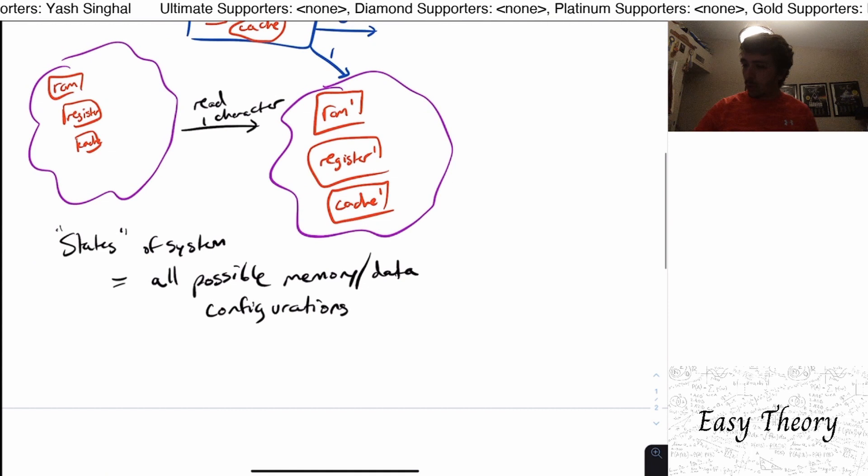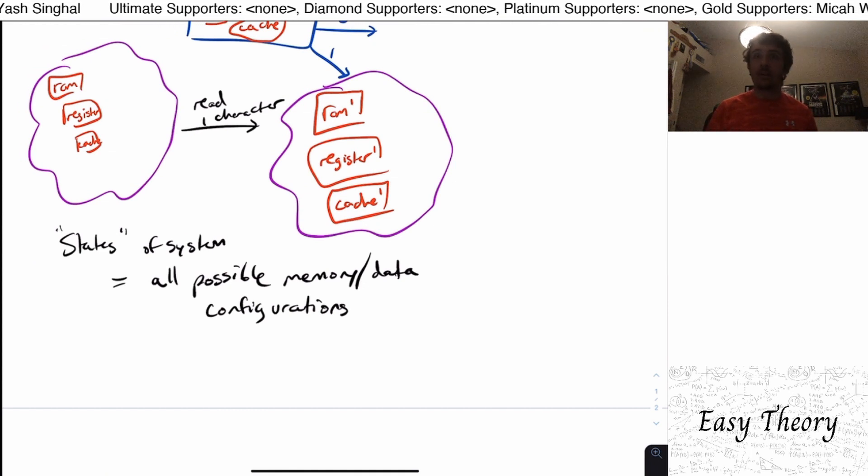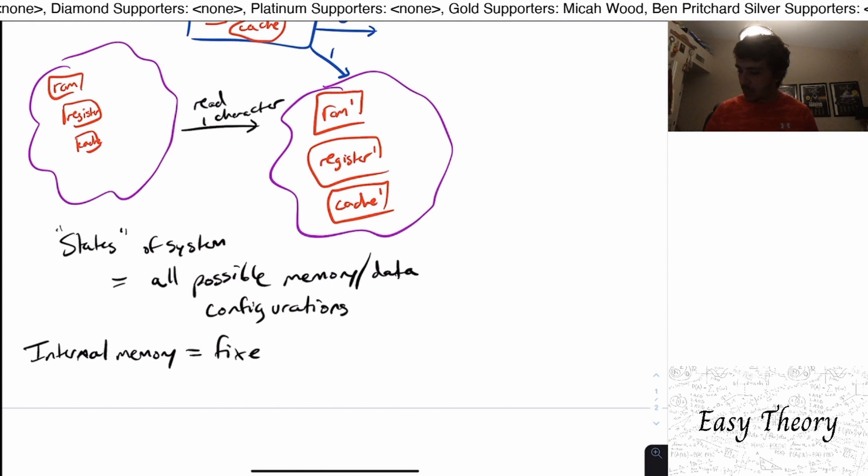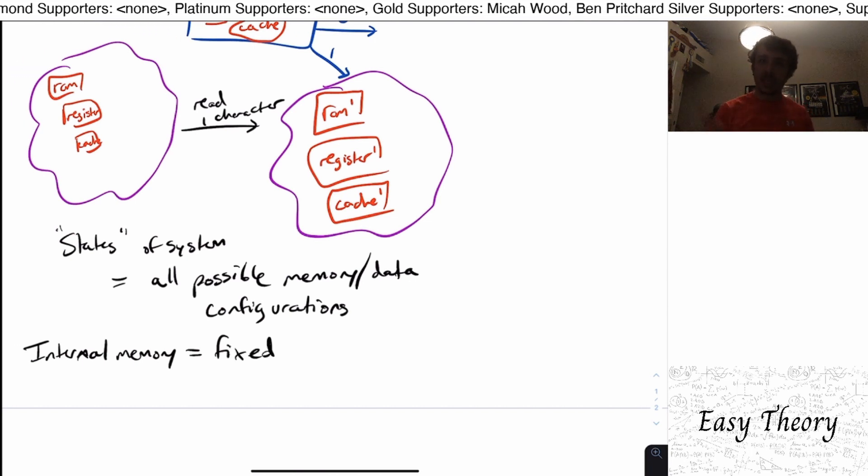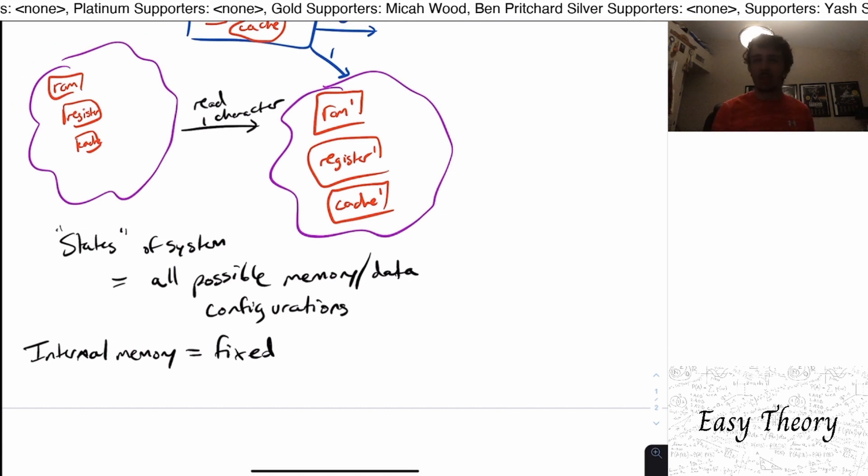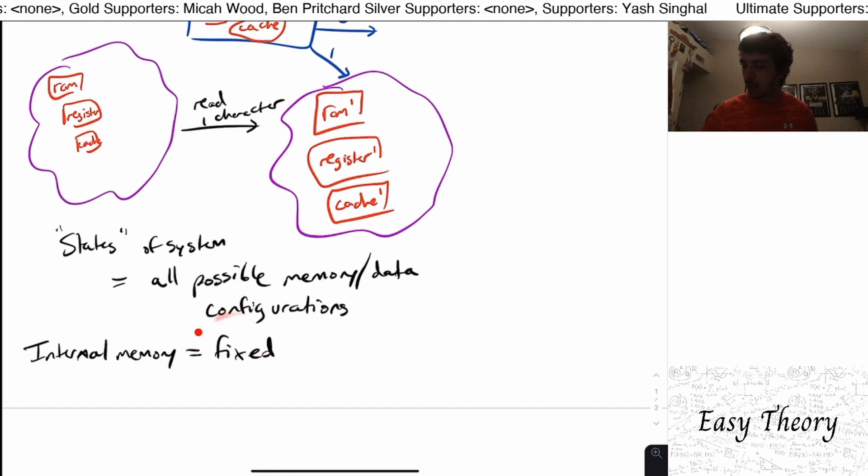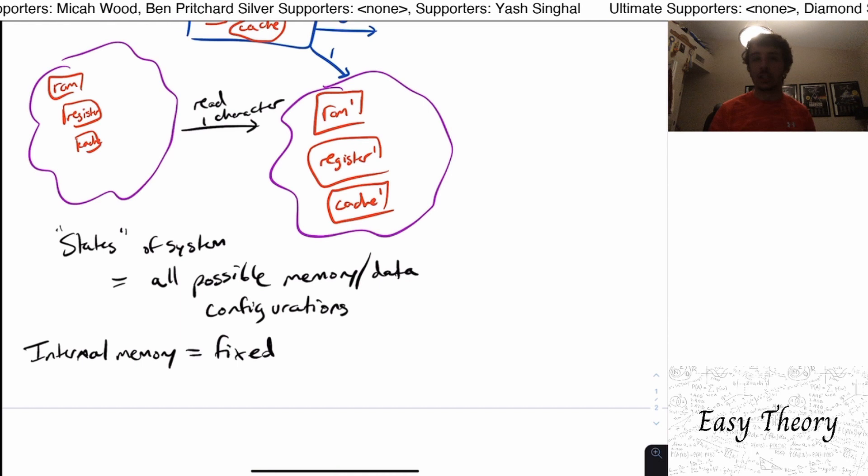So what we're going to do at the very start of this series is we're going to assume that the internal memory of this computer is fixed. And by that I mean, we can't just continually add memory into the computer, because with modern computers, theoretically, you can add as much memory as you want with external drives and whatnot. But here, we're going to assume a fixed amount of memory. Because if we don't let it be fixed, then that fundamentally changes what we can actually compute.